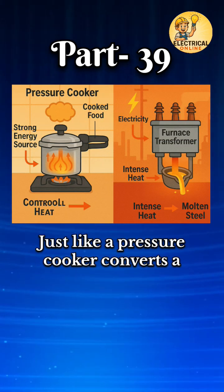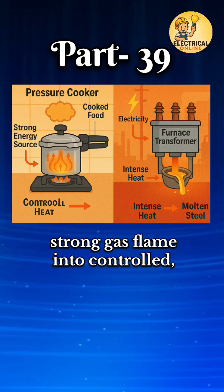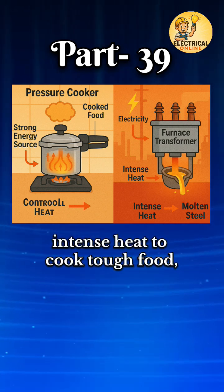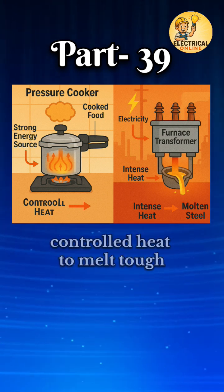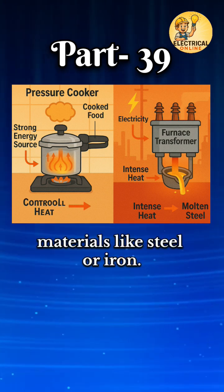Just like a pressure cooker converts a strong gas flame into controlled, intense heat to cook tough food, a furnace transformer converts strong electrical energy into powerful, controlled heat to melt tough materials like steel or iron.